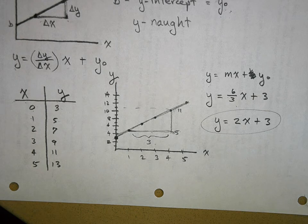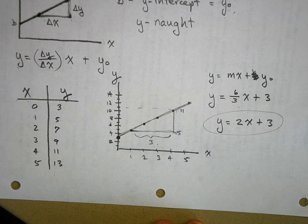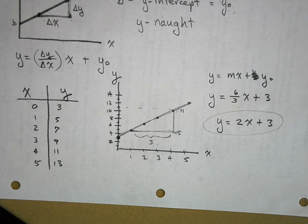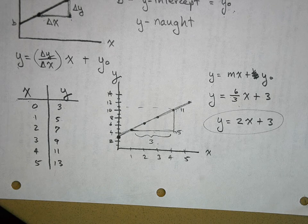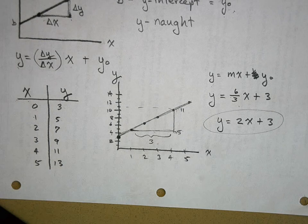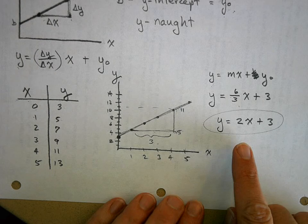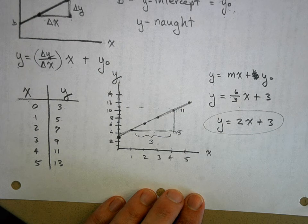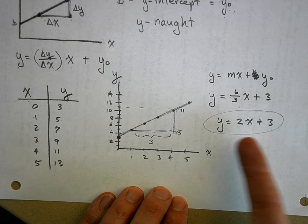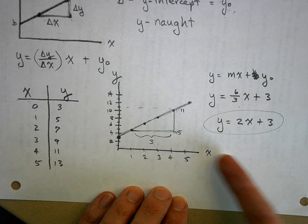This mathematical model can make predictions. What do you think Y is going to be when X equals 10? It's going to be 23. We use equations in physics because they are mathematical models that describe the relationships between quantities we can observe in nature.